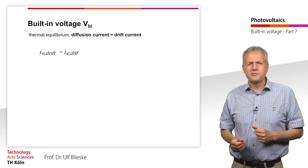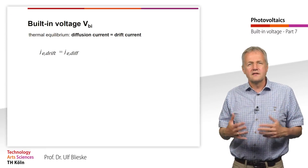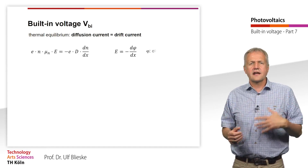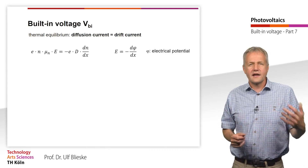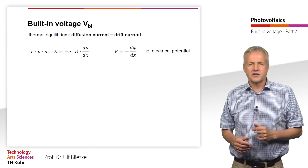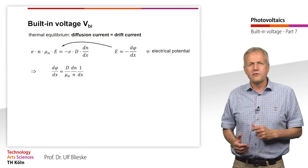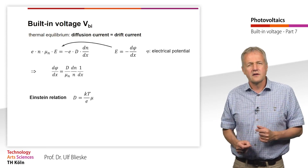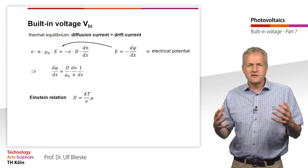To find a mathematical expression for the built-in voltage, we assume a semiconductor in thermal equilibrium. In this case, we can equate diffusion current and field current. As we have just seen, the electric field is the spatial derivative of the electric potential. So we substitute the electric field E by the derivative dφ/dx and rearrange the equation. To solve this equation further, we use the so-called Einstein relation. The Einstein relation links the diffusion constant to the mobility of the charge carriers. It states that the more mobile the charge carriers are, the larger the diffusion constant is.